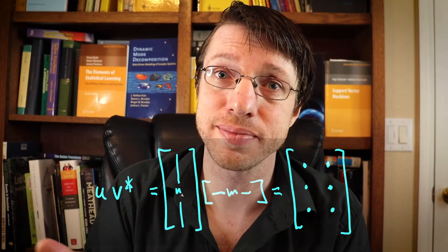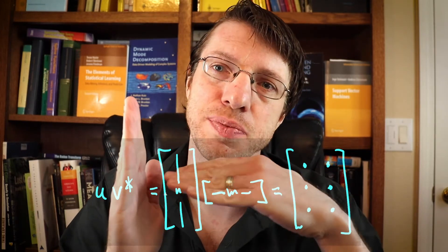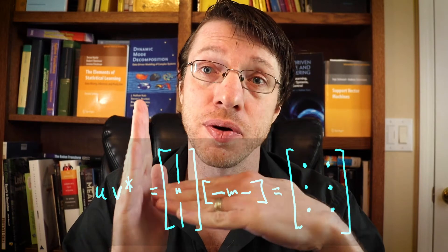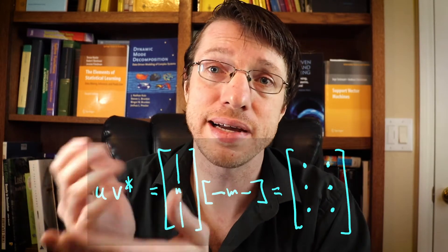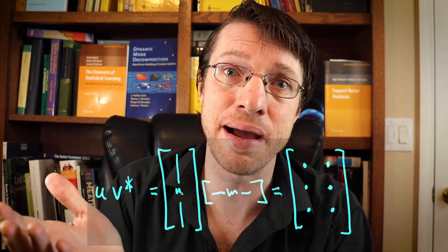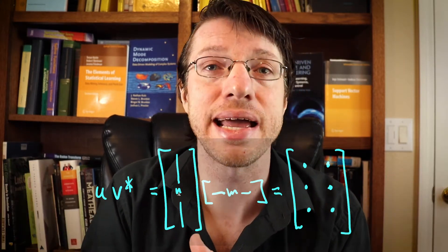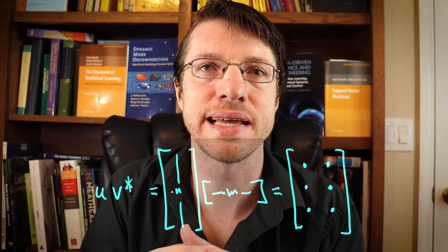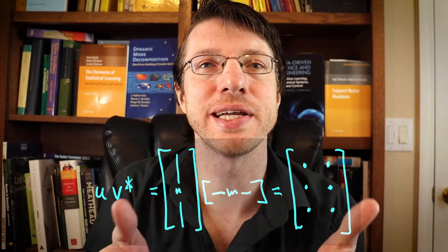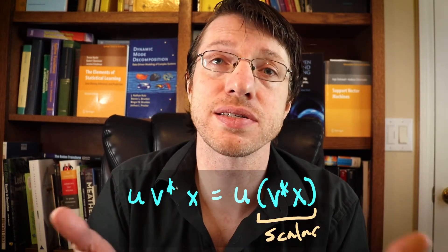And the way we do that is we take one vector, this will be called u, and we put it up here. And then we take the conjugate transpose of another vector we'll call v. And if we take these two vectors and we multiply them together, if u is n-dimensional and v is m-dimensional, you get exactly an n by m matrix. And if you take any vector and you hit this matrix against it, the result of that multiplication will ultimately give you a matrix that is in the direction of u.